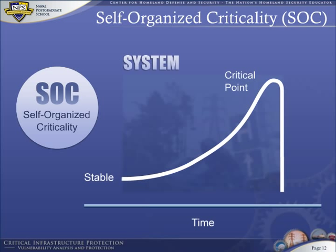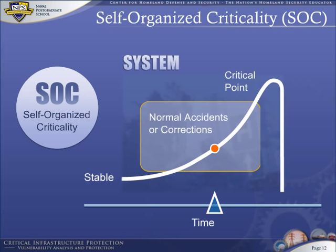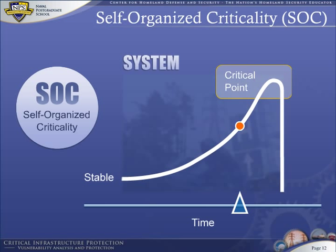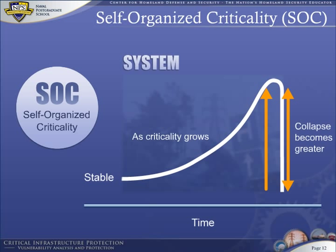Before a system reaches its critical point, it may suffer from a number of normal accidents or corrections, but these have little impact because the system is not critical. But once a system reaches its critical point, even the smallest perturbation can have major consequences. As a system becomes more critical, its eventual collapse becomes greater. Catastrophe is magnified and inevitable.